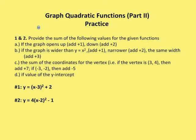So the first two questions, we have to sum some values based on what we find in the graph. It says: provide the sum of the following values for the given function. If the graph opens up, add one; down, add two. If the graph is wider than the parent function y=x², add one; narrower, add two; the same width, add three. Find the sum of the coordinates for the vertex and add them together, and the value of the y-intercept.